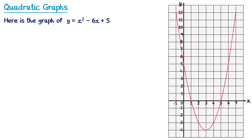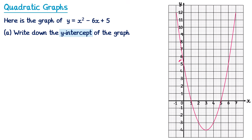Sometimes rather than drawing a quadratic graph, we'll be given one that's already been drawn and asked some questions about it. So here is a graph of y equals x squared minus 6x plus 5. The first question says: write down the y-intercept of the graph. The y-intercept is where the graph crosses the y-axis — the vertical axis labelled y. We can see the graph crosses it at point 5, so the y-intercept is 5. If asked as a coordinate it would be 0, 5.